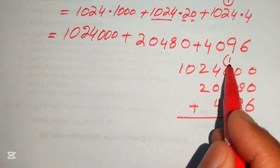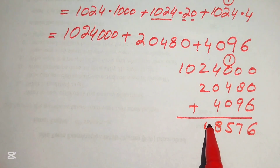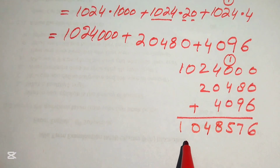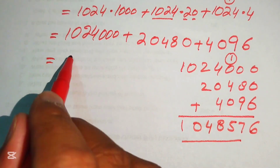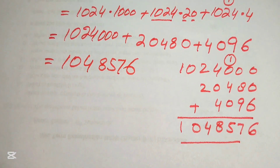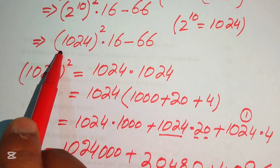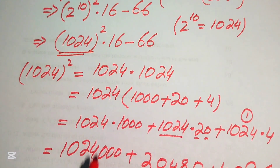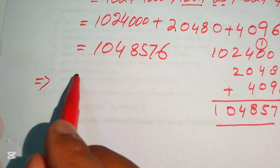Continuing the addition: 1 plus 4 is 5; 4 plus 4 is 8; 2 plus 2 is 4; and 0 and 1. Adding all three values gives 1,048,576. In the next step we move back and substitute 1024 squared equals this value into our expression.